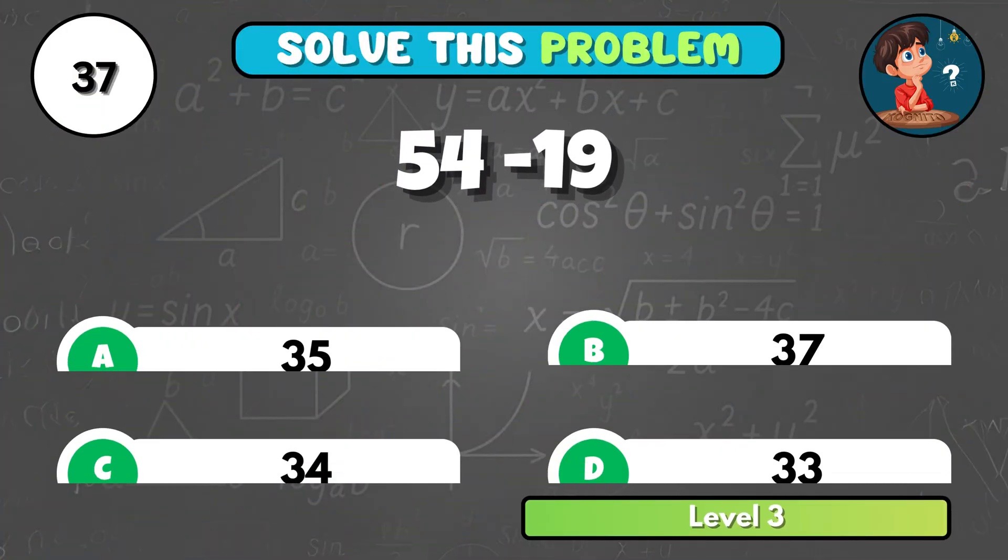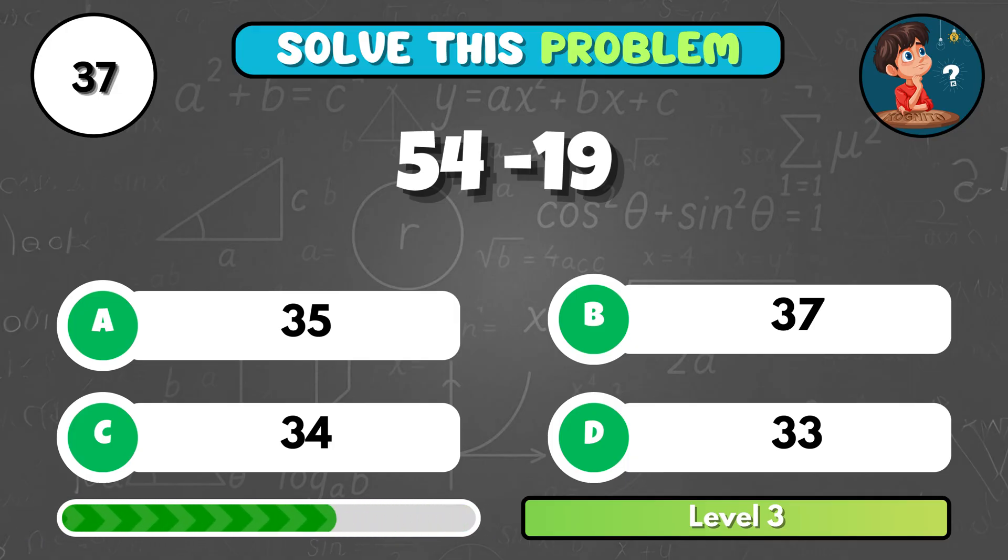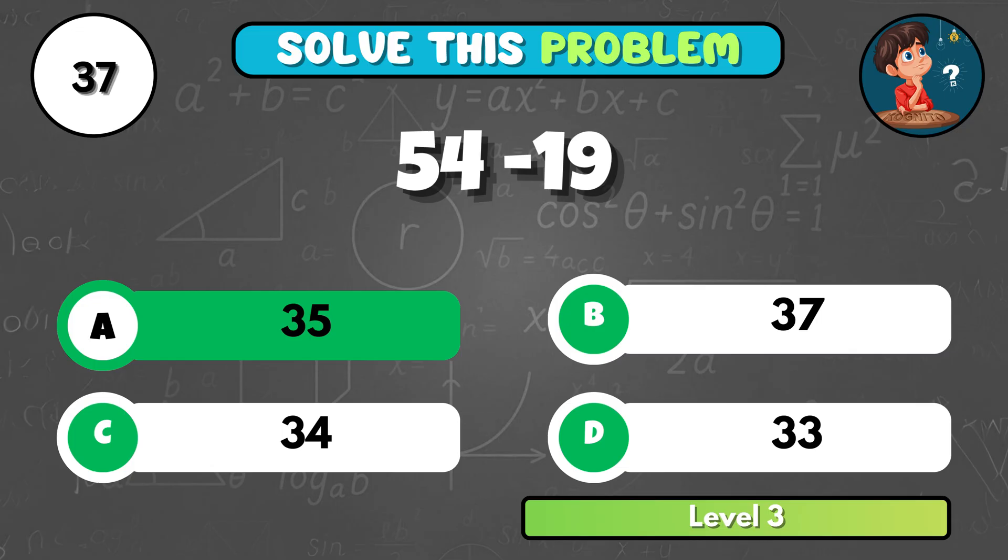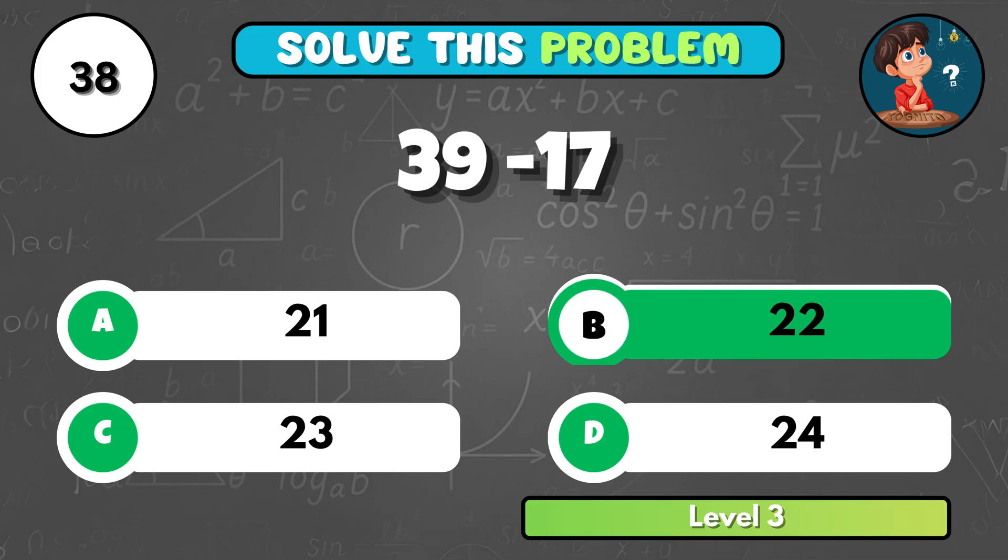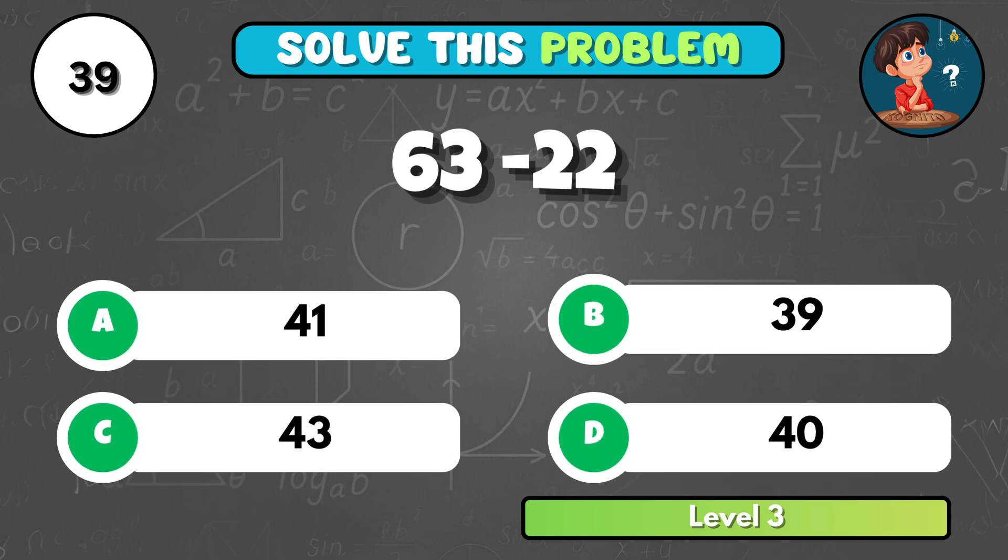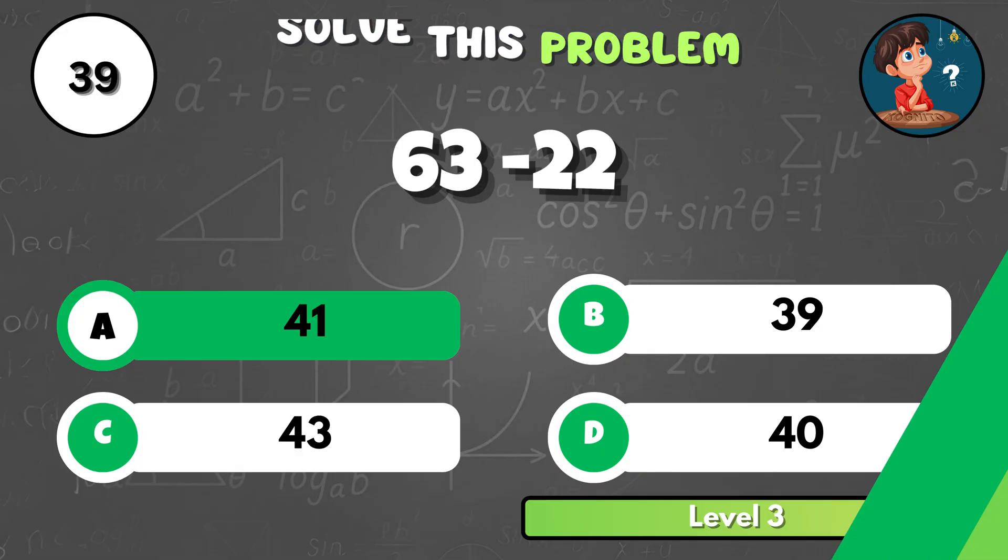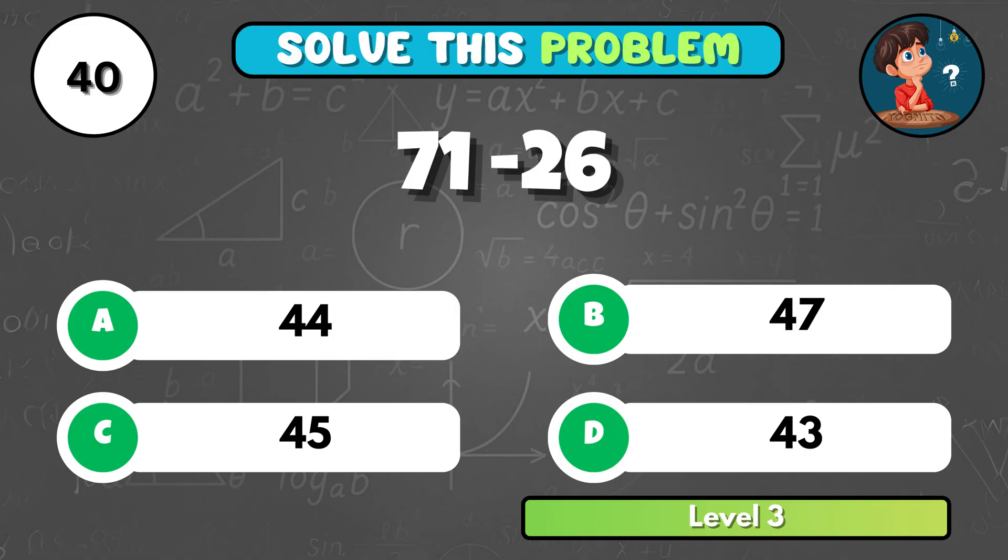What do you get when 54 minus 19? That's A, 35! Can you figure out 39 minus 17? It's B, 22! Quick one! 63 minus 22 gives you what? That's A, 41! Here comes another! 71 minus 26 equals... It comes to C, 45!